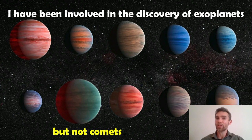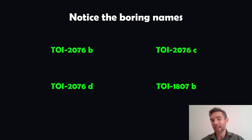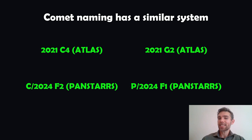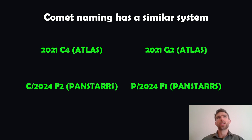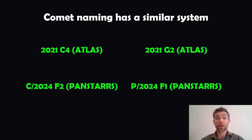Comets are a bit different. So let's go through that. These are some planets I've been involved with — they have boring names. If you want to name an object, stay away from exoplanets. But what we're going to do is look at comets. These are some names of some comets. They use a similar system — there is some logical way in which they get a name — but they also get an actual name as well. You'll see there's a code at the beginning, the front part of their name, and then something like Atlas or Pan-STARRS at the other end. So there's two parts to this, a bit different than exoplanets. Let's go through that system and explain how they actually get their name, and what it means for you if you discover a new comet.